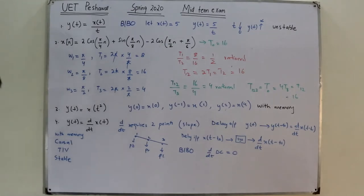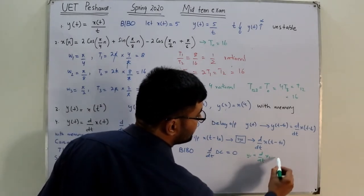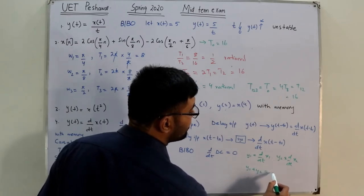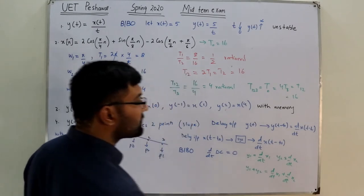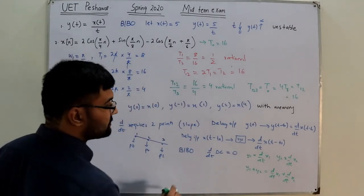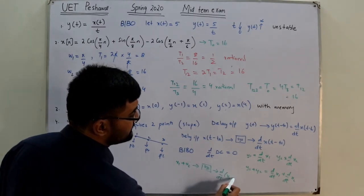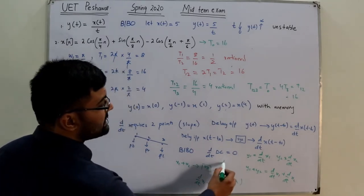For linearity we check additivity and homogeneity. For additivity: y1 + y2 = derivative(x1) + derivative(x2). If we add inputs first and feed x1 + x2 to the system, we get derivative(x1) + derivative(x2) by opening the brackets. Additivity is satisfied.